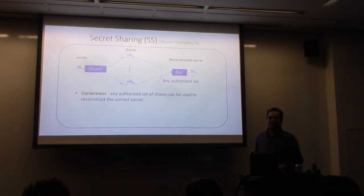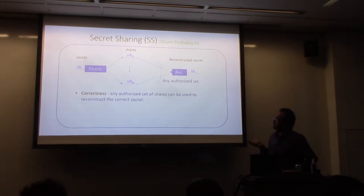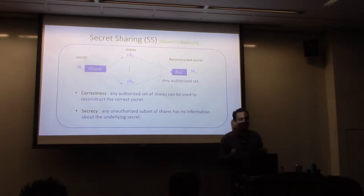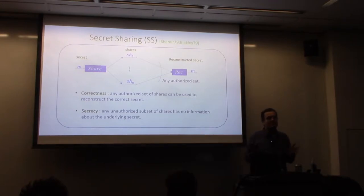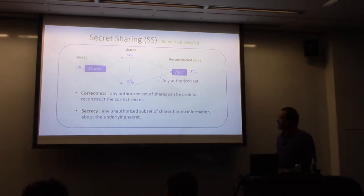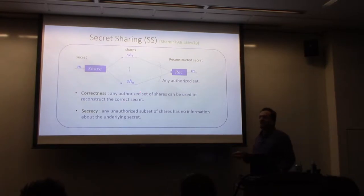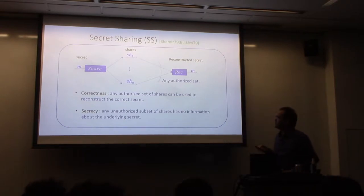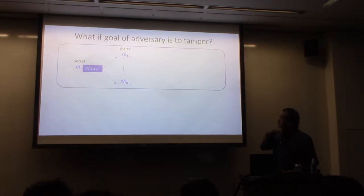We need two basic properties from any secret sharing scheme. First is correctness: any authorized set of shares can be used to reconstruct the correct secret. Second is secrecy: any unauthorized subset of shares has no information about the underlying secret — the secret is information-theoretically hidden entirely. What is authorized and what is not is a parameter of the scheme. For the rest of this talk, think of the access structure as T-out-of-N — if you have a threshold number of shares, you can recover; otherwise you cannot.